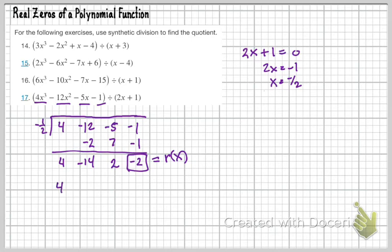And my q(x) is going to be 4x squared minus 14x plus 2. And that's what my q(x) is. And that's going to be what this results in here.